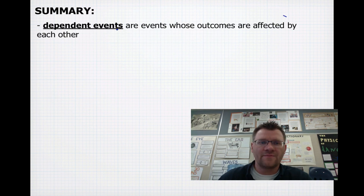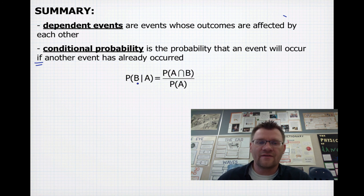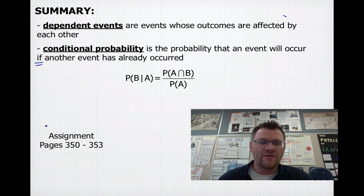In summary, dependent events are events whose outcomes are affected by each other — like pulling a ball without replacing it. Conditional probability is the probability that an event will occur if another event has already occurred; the keyword is 'if.' The probability of event B occurring given A has already occurred equals the probability of both A and B occurring divided by the probability of A. Your assignment is on pages 350 to 353.